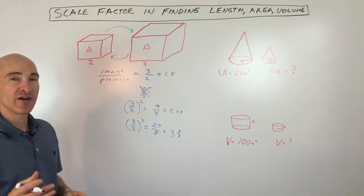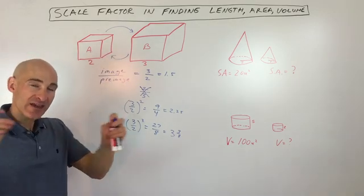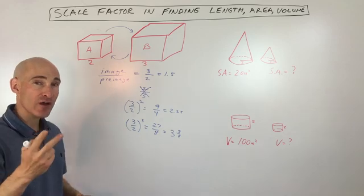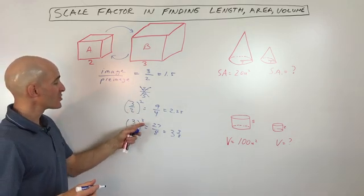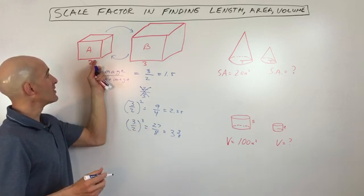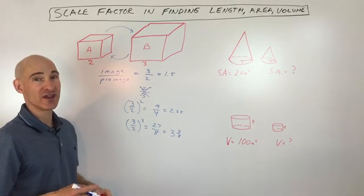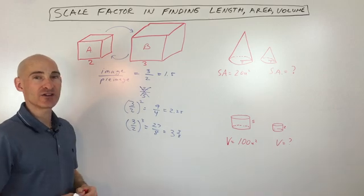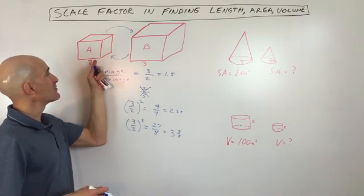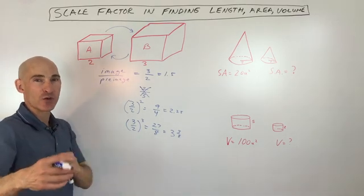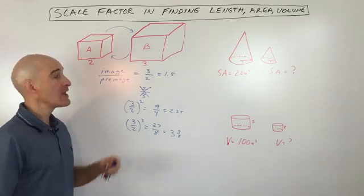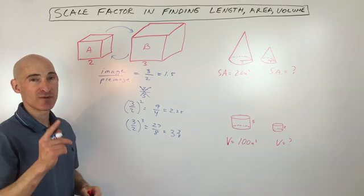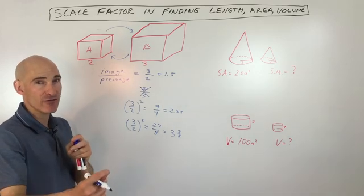So the key is to figure out whether you're comparing lengths, which are one-dimensional, area, which is two-dimensional, or volume, which is three-dimensional. So if it's three-dimensional, you're going to be cubing the scale factor because the length, the width, and the height are all being multiplied by that scale factor. If it's just area, it's just going to be two-dimensional. It's just like the length and the width that are being multiplied by that scale factor. So it's the scale factor squared. And then if it's just length, it's just going to be one-dimensional. You're just going to be multiplying by the scale factor.